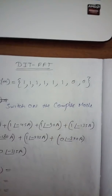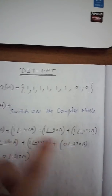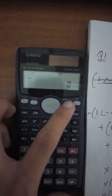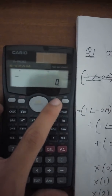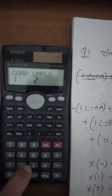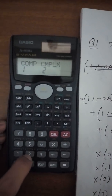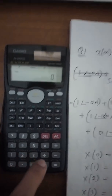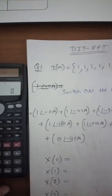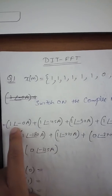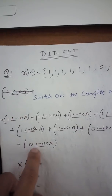The first step is we have to switch on the calculator to complex mode. To do this, press the Mode button, then enter complex mode by pressing the 2 button.